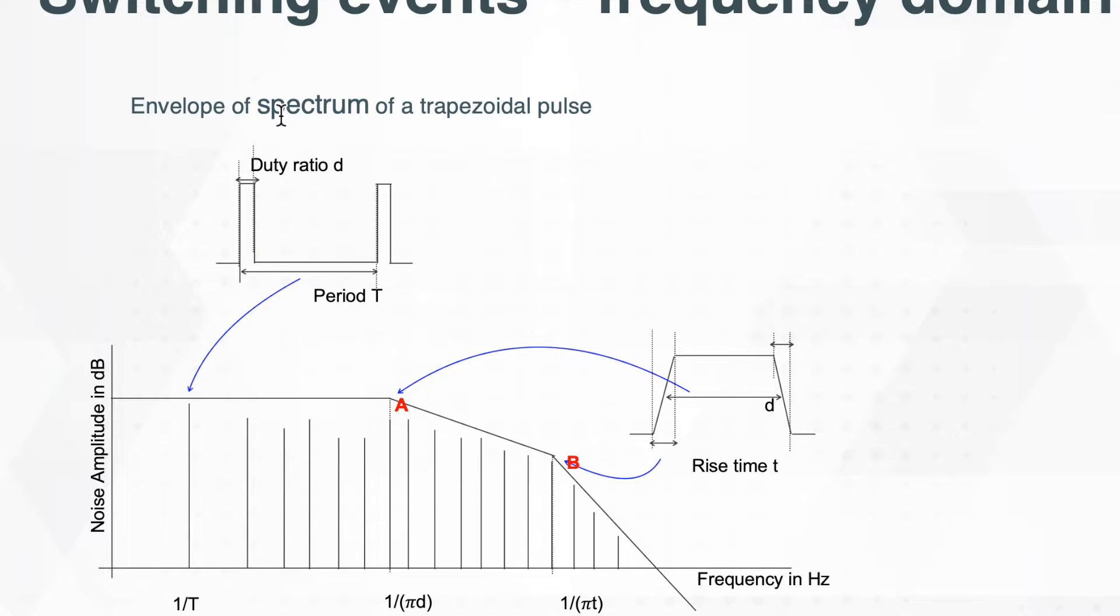This is one of my favorite EMC related diagrams. It shows you the envelope of a spectrum of a trapezoidal pulse signal. But what does it really mean?